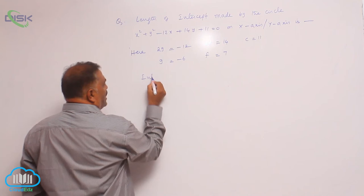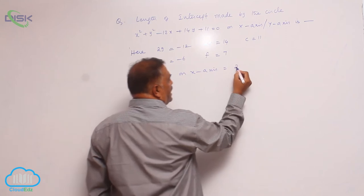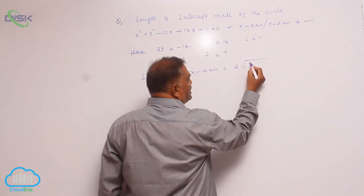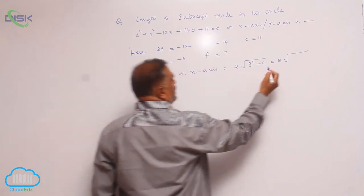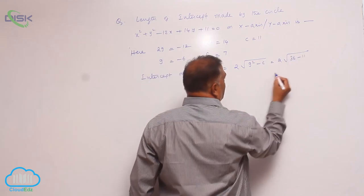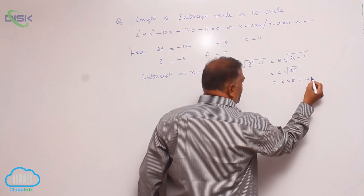So, intercept on x-axis is given by the formula 2 root g square minus c. That's 2 root of 36 minus 11, which is 2 root 25. That is 2 into 5, that is 10 units.